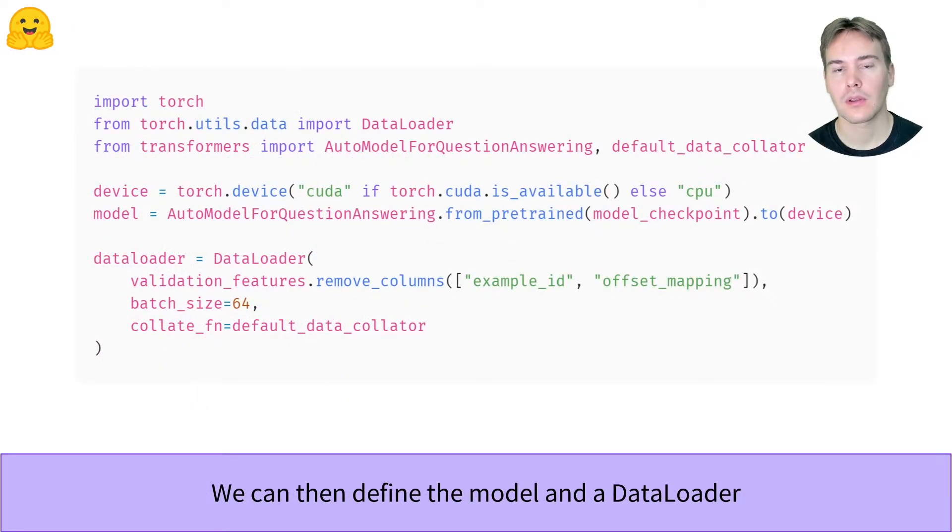When this is done, the next step is to create our model. We use the default model behind the question answering pipeline here, but you should use any model you want to evaluate. We'll run a manual evaluation loop, so we create a PyTorch data loader with our features.